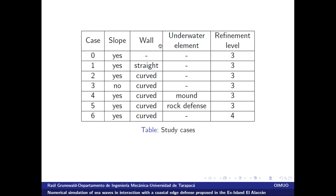The 7 cases differ by these parameters: slope, wall type, underwater element, and refinement level. For example, case 1 has a slope, a straight wall, no underwater element, and refinement level 3. Cases 2 and 6 both have a slope and a curved wall with no underwater element, but different refinement levels — case 6 is an experiment of case 2 to analyze the influence of an additional refinement level.